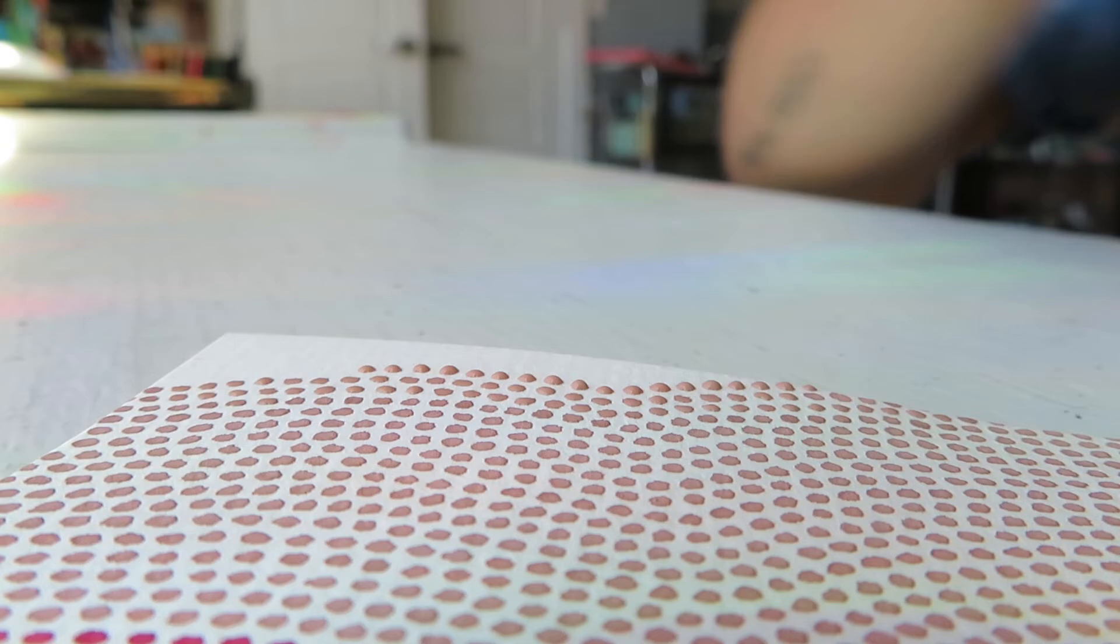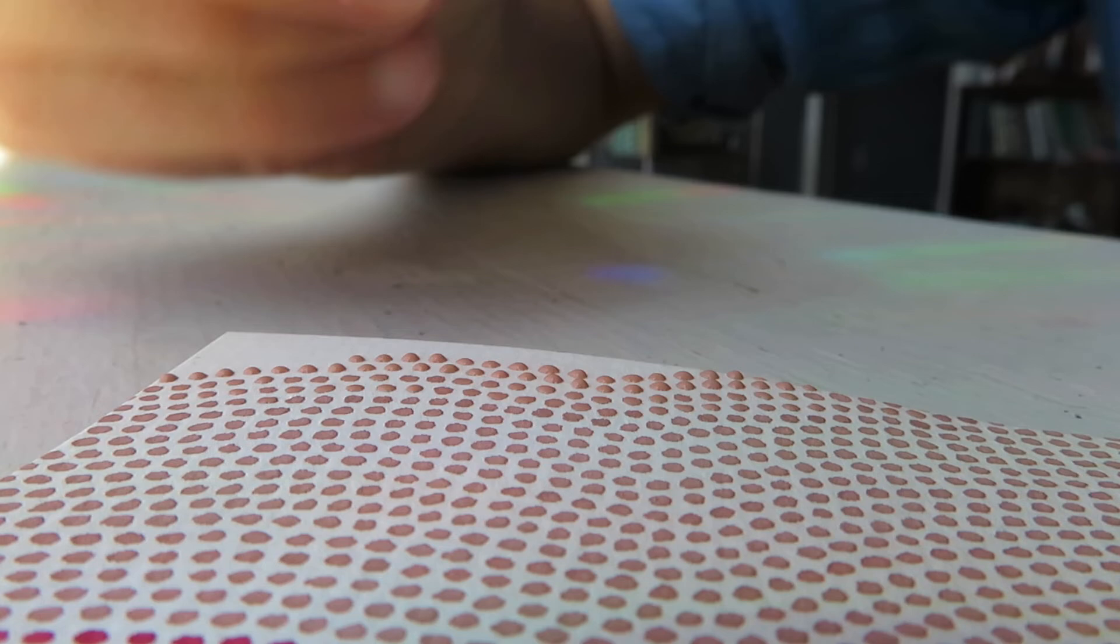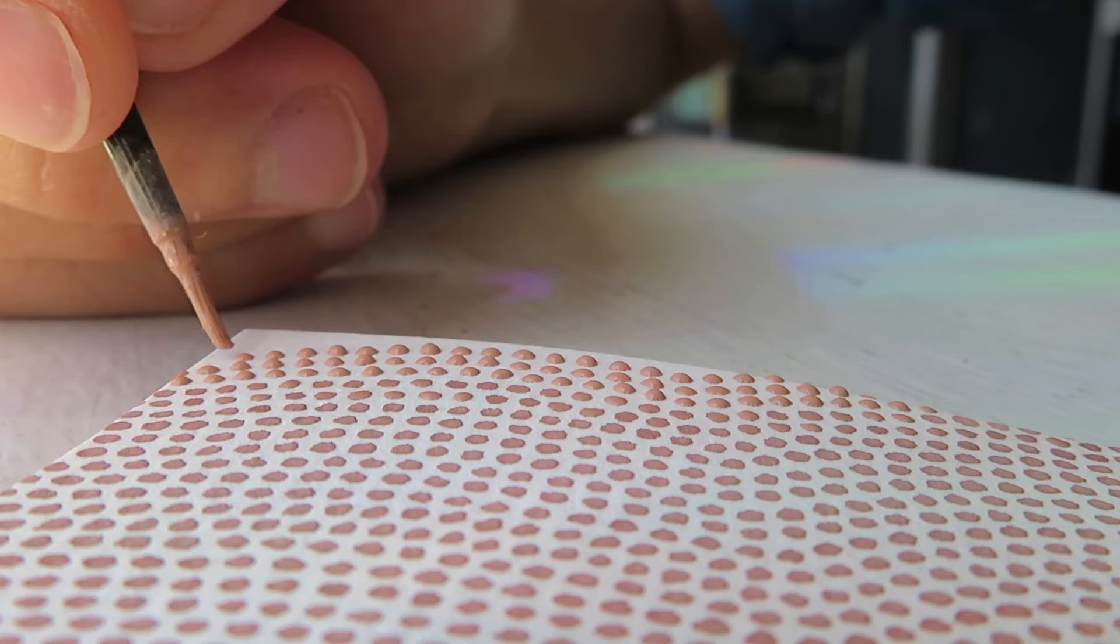I'm almost done here, an attempt at a tie-dye pattern, aloe vera, which I've done an abstract version of, but I would like to try a more realistic approach to this plant, a peanut, an almond, and my biggest enemy, the cashew.